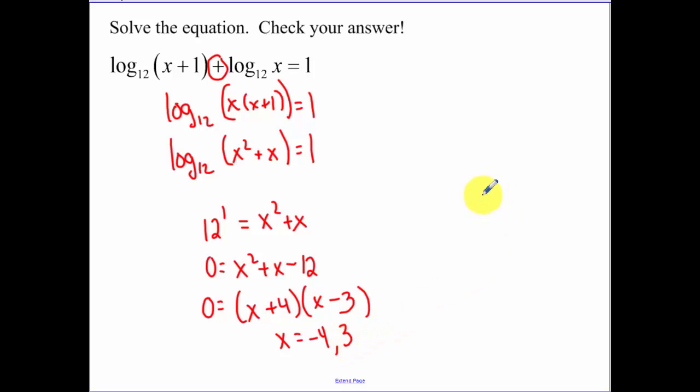Now again, check to make sure your answers don't make the insides negative. If you look at this negative 4 right now, when you plug in the negative 4 for x, that's going to make that x negative. Not the simplified version, the original. Keep that in mind, the original. So negative 4 ends up being an extraneous solution. When I plug in 3, that makes sense. So our only answer is 3.